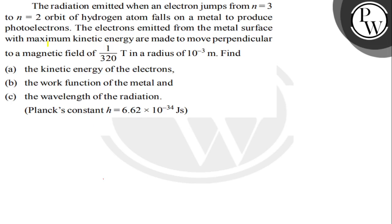Hello, let's read the question. The question says: the radiation emitted when an electron jumps from n=3 to n=2 orbit of a hydrogen atom falls on a metal to produce photoelectrons. The electrons emitted from the metal surface with maximum kinetic energy are made to move perpendicular to the magnetic field having value 1/320 tesla in a radius of 10 raise to minus 3 meter.